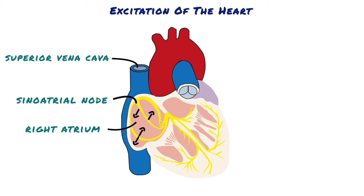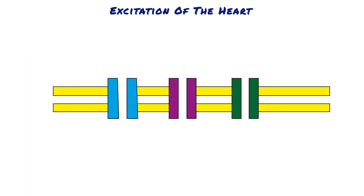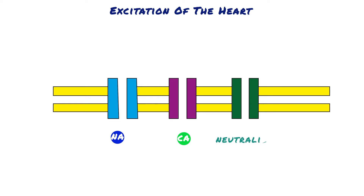The resting membrane potential of the sinus nodal fibre between discharges has a negativity of about negative 55 to negative 60 millivolts, in comparison with negative 85 to negative 90 millivolts for the ventricular muscle fibre. The cause of this lesser negativity is that the cell membranes of the sinus fibres are naturally leaky to sodium and calcium ions, and the positive charges of the entering sodium and calcium ions neutralise some of the intracellular negativity.